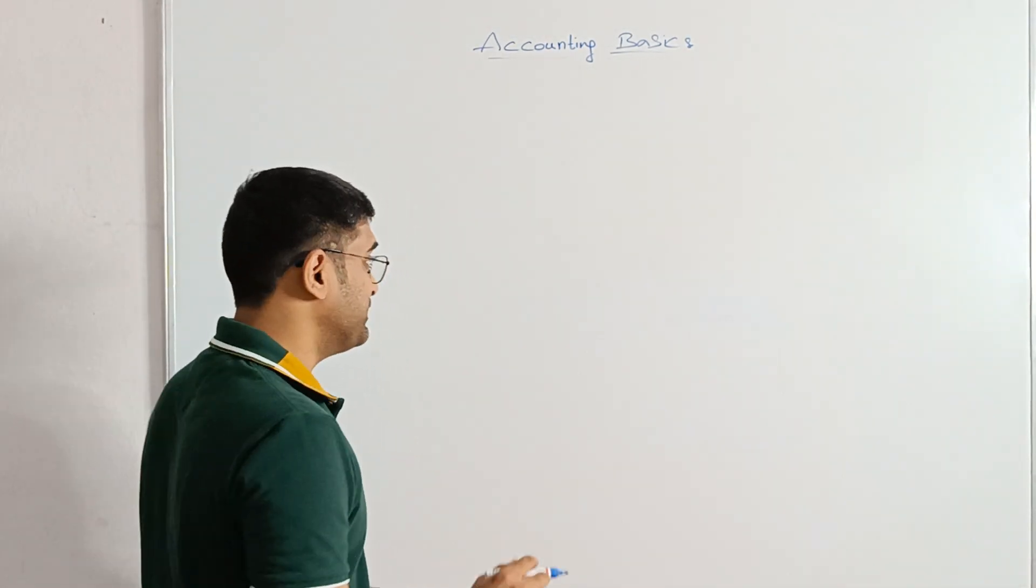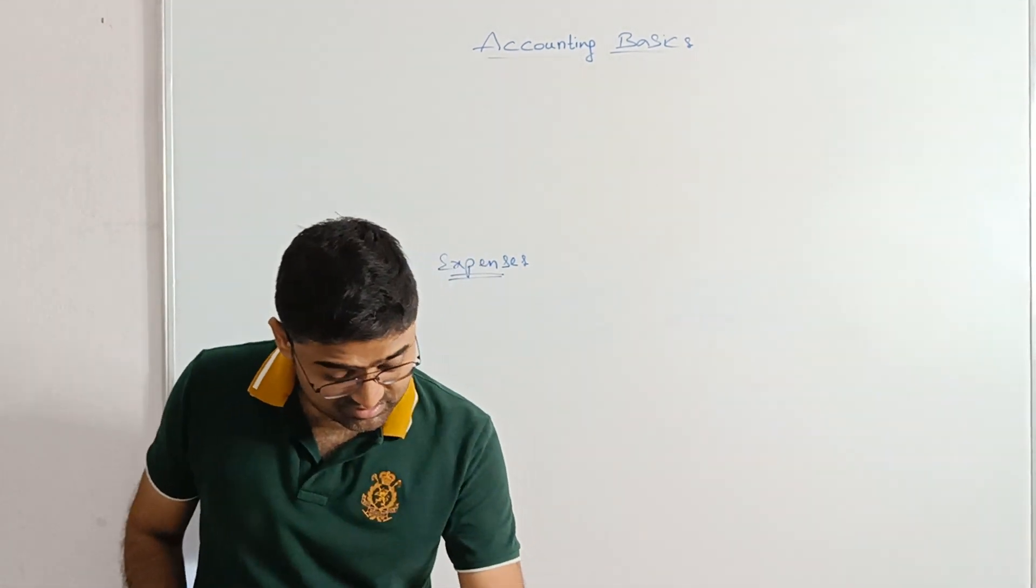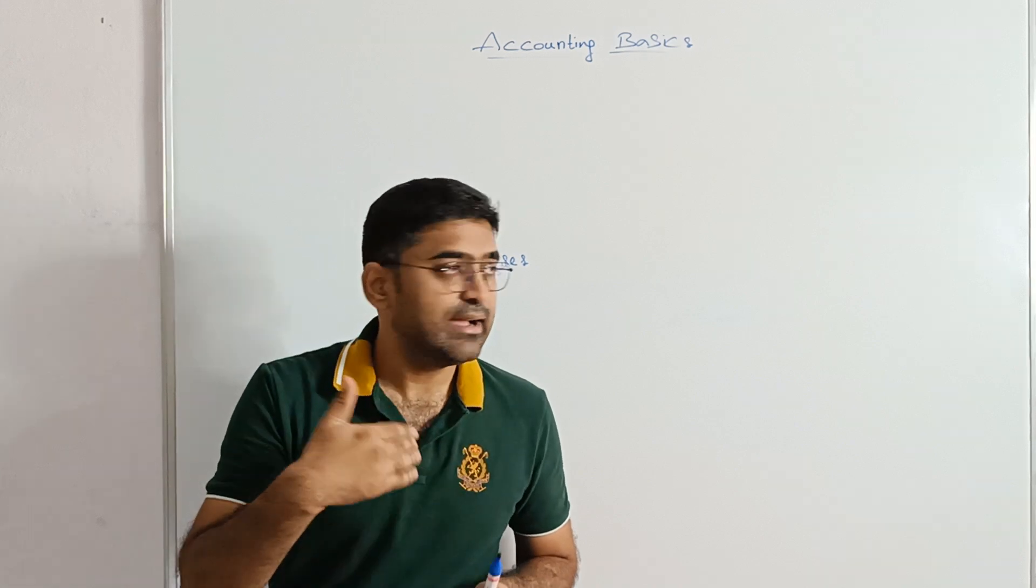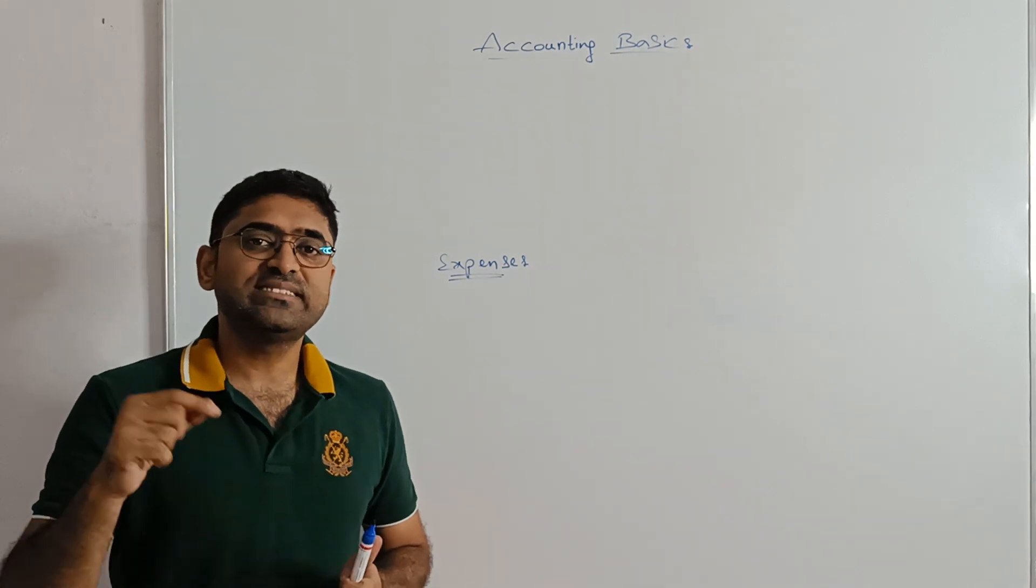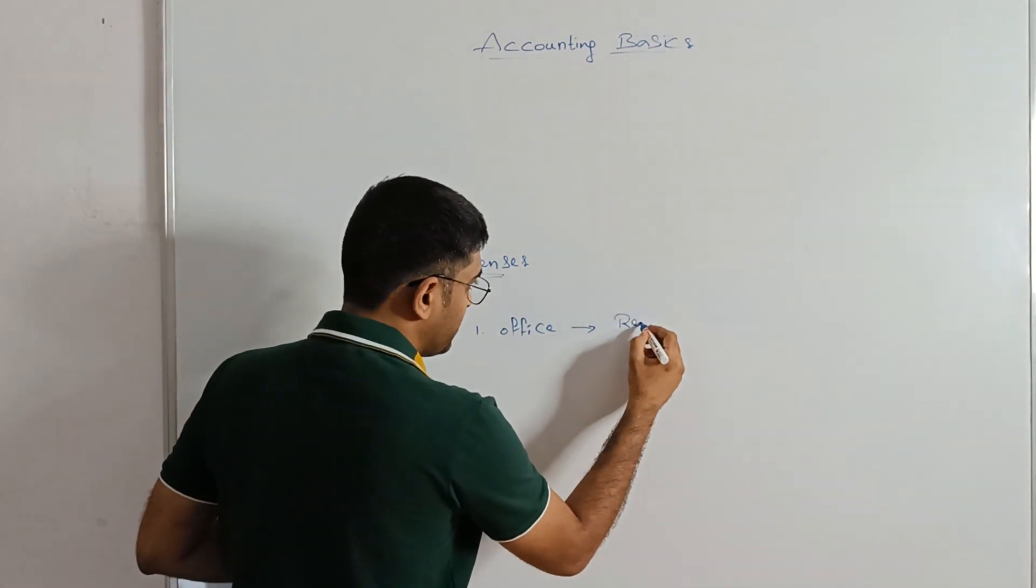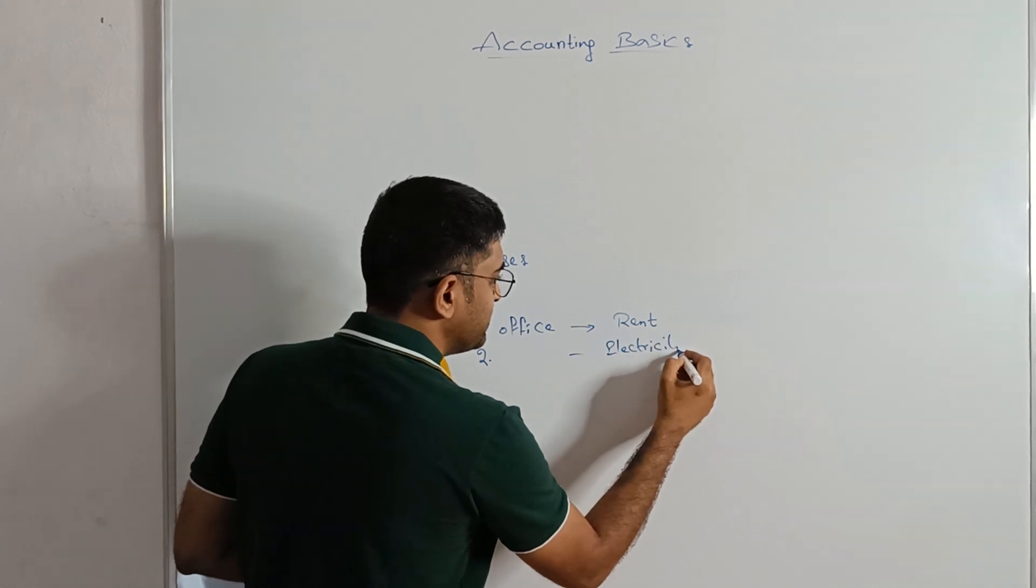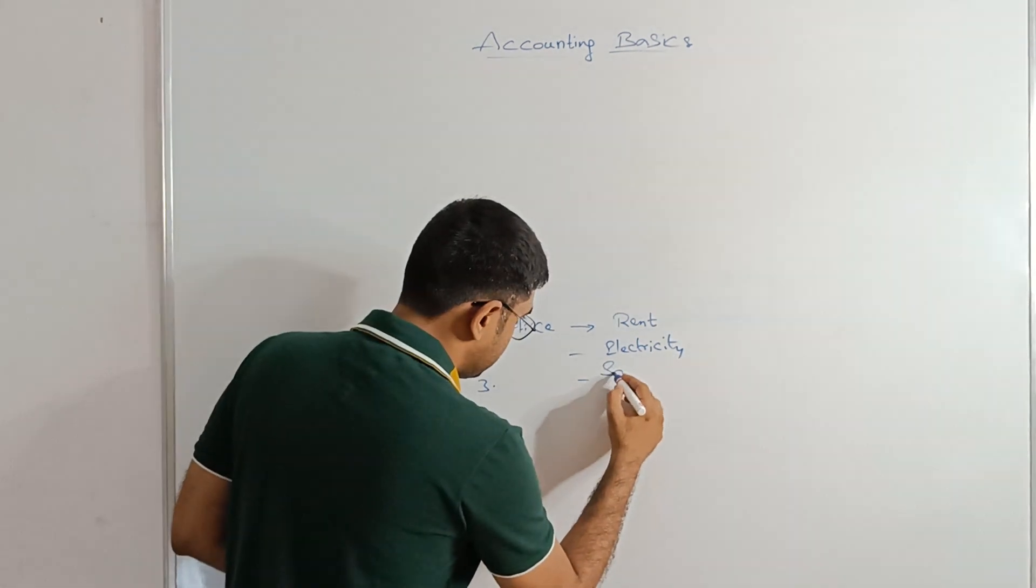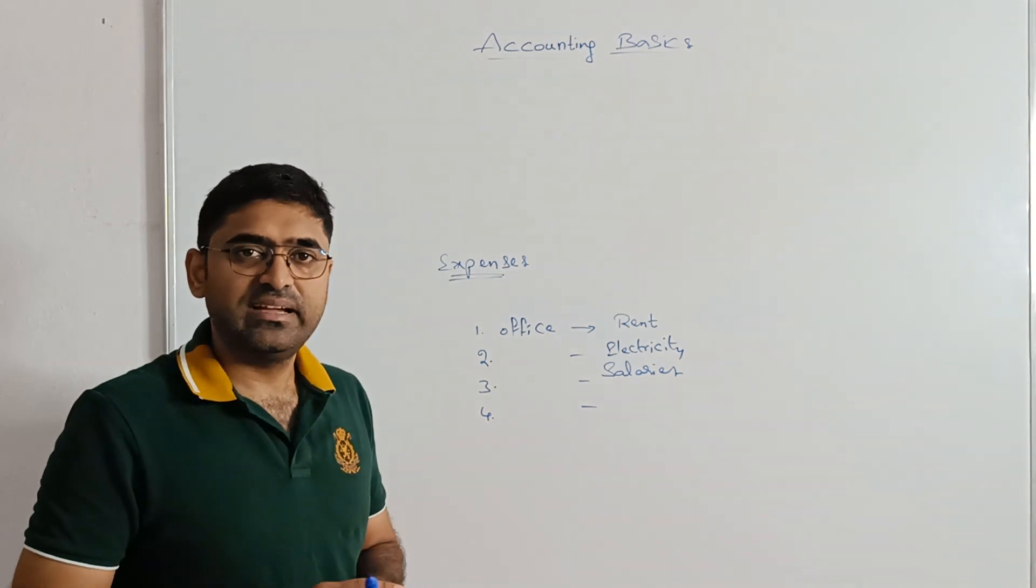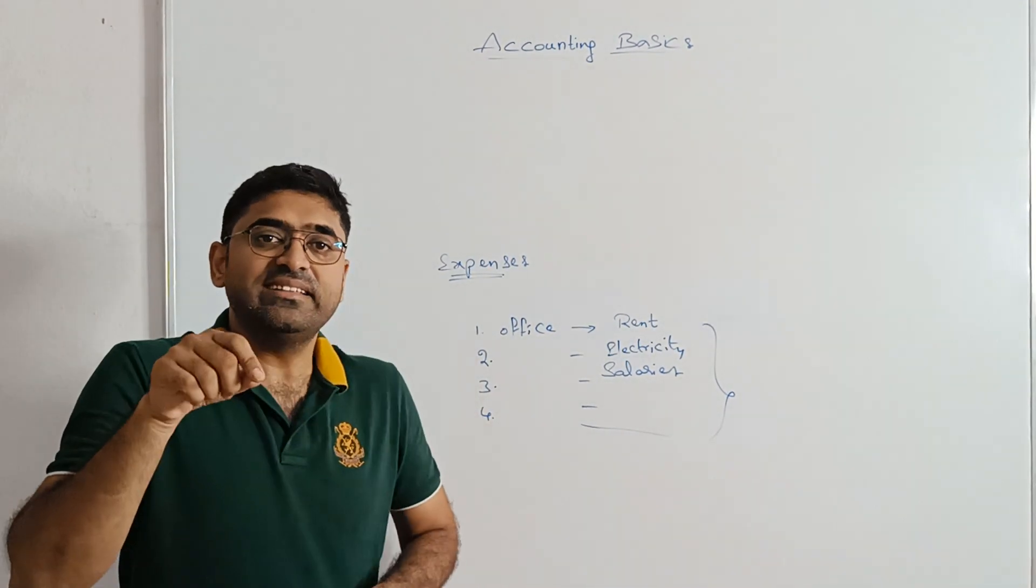The next concept is expense. What is an expense? The money you spend on the things you need to run the business. As I said, I have a chartered accountancy firm. To run the firm, to provide service to the client, I need an office. Office space I need. For that I am going to pay rent. I need electricity. Electricity bill. I also need to pay salaries to my employees. There may be some other expenses. Like I use a laptop for providing services, etc. So all these things we call them as expenditure.